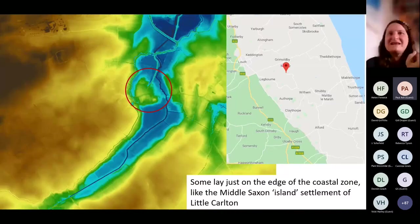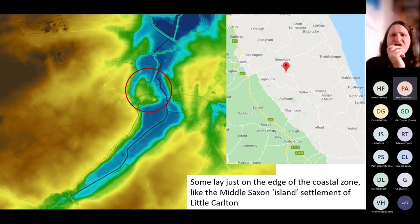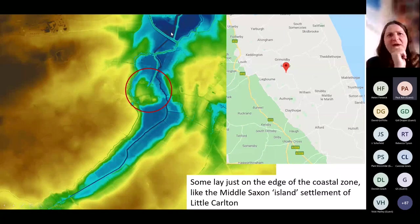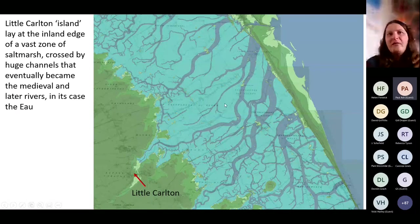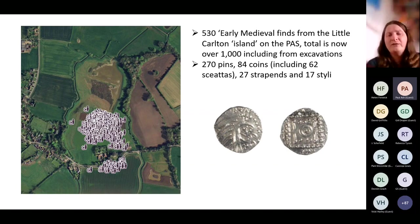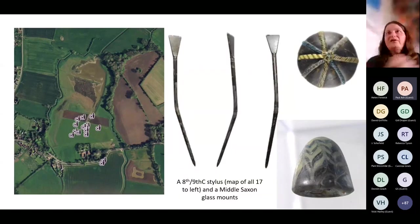We have a few specific islands that were particularly interesting. Some lay just on the edge of the coastal zone. This is Little Carlton, near Louth, right at the very edge, with a major creek coming just into this area in the early medieval period. It's a fairly famous site — slightly higher than the main Middle Marsh but with creeks coming very close to it. You'll have seen on TV and in the newspapers about the tremendous finds from this island site: 530 early medieval finds on the PAS, over a thousand including from excavations — styluses, lovely Middle Saxon glass mounts. Something clearly very significant was going on on that island.